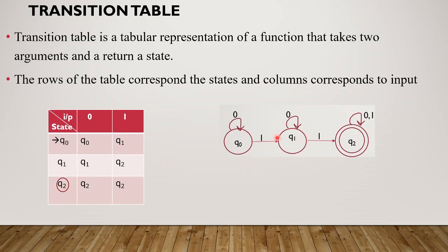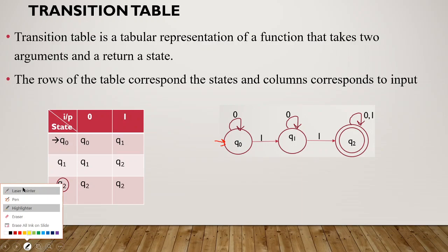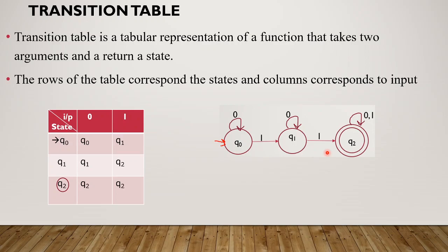The states Q0, Q1, Q2 are listed as rows. The initial state Q0 is marked with an arrow symbol, and the final state Q2 is marked with a star or double circle convention. The input symbols 0 and 1 form the columns of the table.